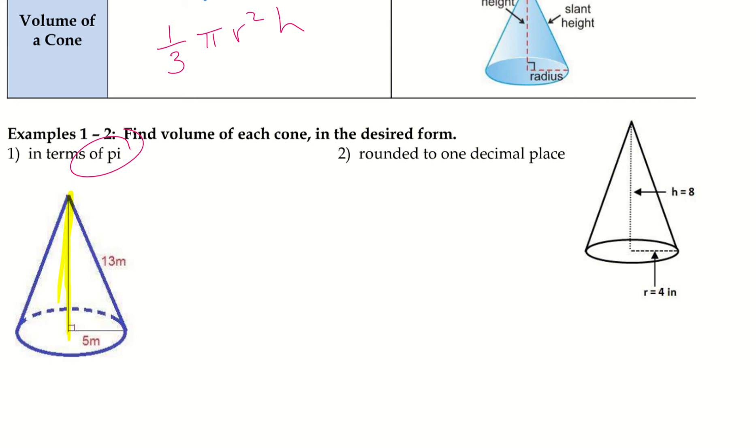This is a triple, and this is a 5, 12, 13 triple. So, therefore, I can say one-third pi, and then r is 5, and square that, and then multiply it by the height.